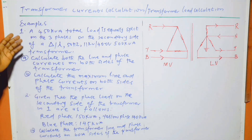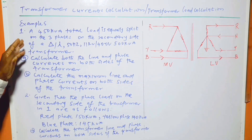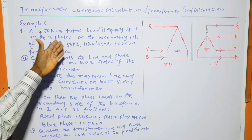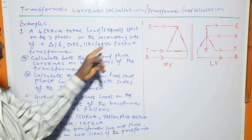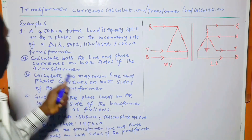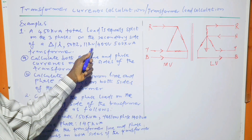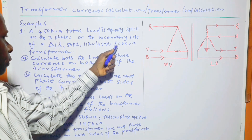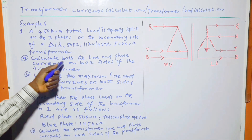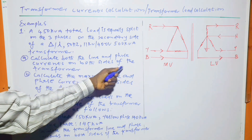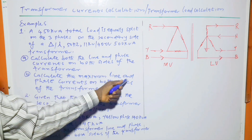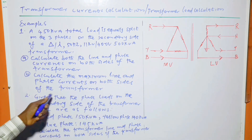Example one: a 450 kVA total load is equally split on the three phases on the secondary side of a delta-star, 11 kV / 400 V, 500 kVA transformer. The question asks to calculate both the line and phase currents on both sides of the transformer, and part B asks for the maximum line and phase currents on both sides of the transformer.